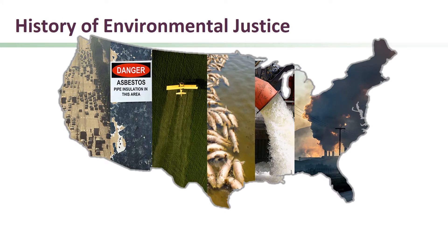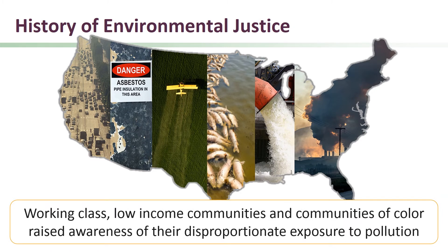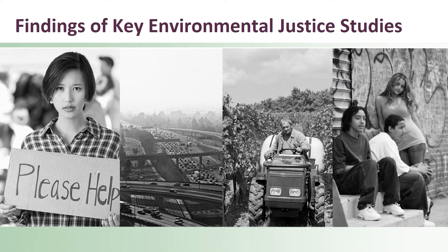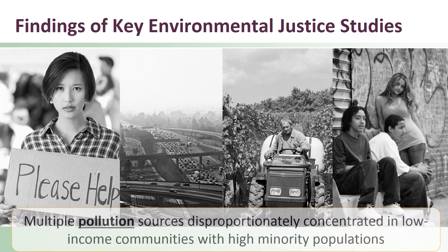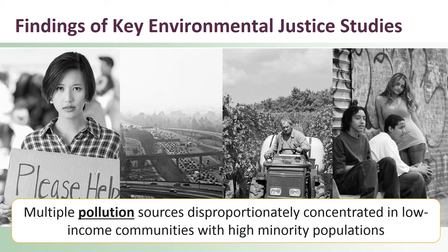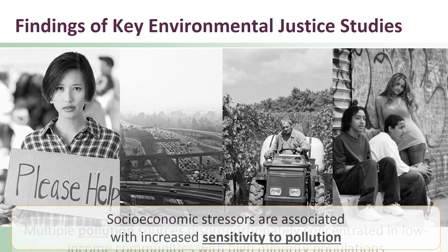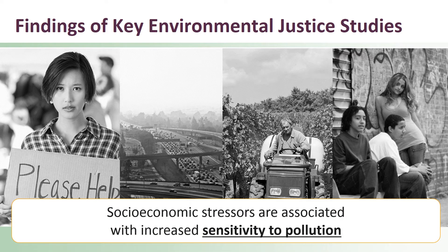The environmental justice movement began when working class and low-income communities and communities of color began to raise awareness of their disproportionate exposure to pollution from many different sources. There are different types of studies that provide a scientific basis for concern over impacts in communities. For example, many studies have found that multiple pollution sources are disproportionately concentrated in low-income communities with high minority populations. Other research suggests that socioeconomic stressors, like poverty, are associated with increased sensitivity to pollution.